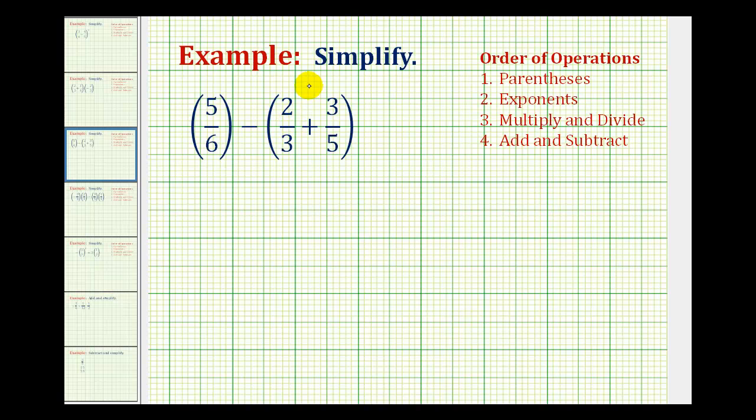So for the first step, we'll determine the sum of two-thirds and three-fifths. We know we'll have to determine a common denominator in order to add these fractions. And for two-thirds and three-fifths, the least common denominator would be 15.